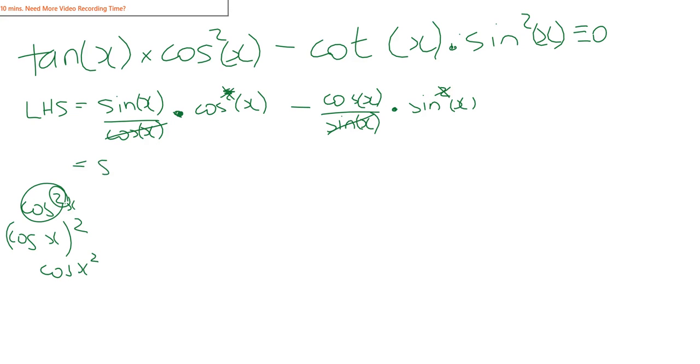I'm left with sin x cos x minus cos x times sin x. Sin times cos minus cos times sin. Isn't that just zero?